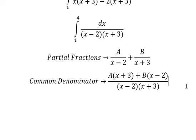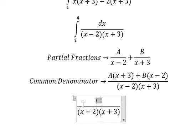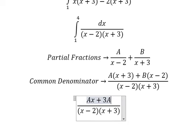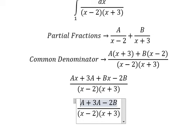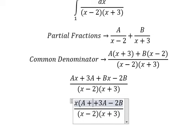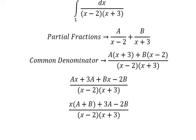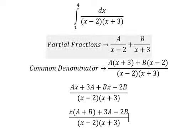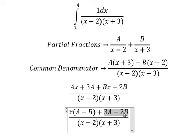Now we need to expand and you got Ax + 3A + Bx - 2B. Next, for x and x we can do factorization: x(A+B) + 3A - 2B. Now we need to compare coefficients. We have 1, that means this one equals to 1.